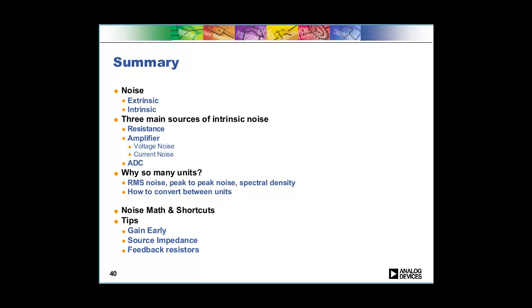We talked about the different ways of measuring noise and how to convert between these different methods and units. We talked about some noise math—how to both add noise, which you add as the sum of squares, and then multiplication, which is just like normal. And then we talked about some tips. The main tips are apply as much gain as you can at the front and then watch out for your resistance, both your feedback resistors and your source resistance.